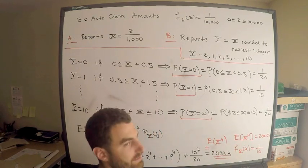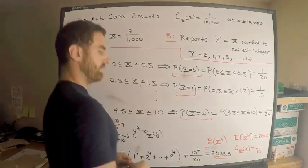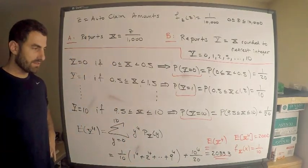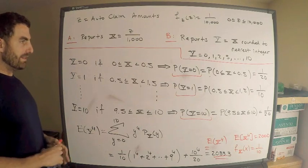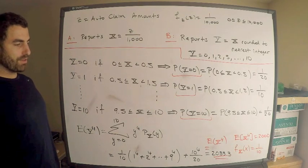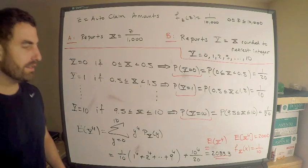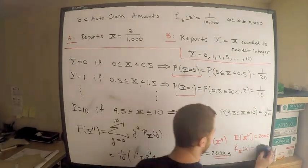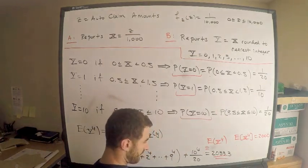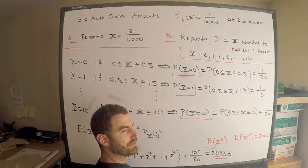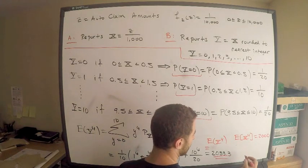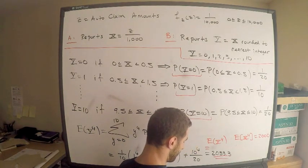The fourth moment of Y is approximately 2,033.3 and the fourth moment of X is 2,000. The absolute value of the difference is 33.3. So our answer is 33.3.